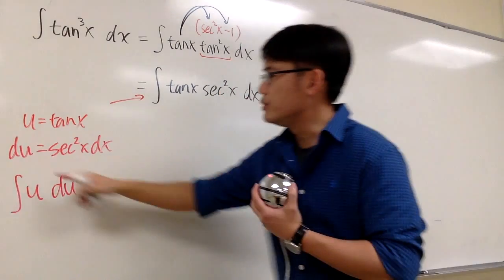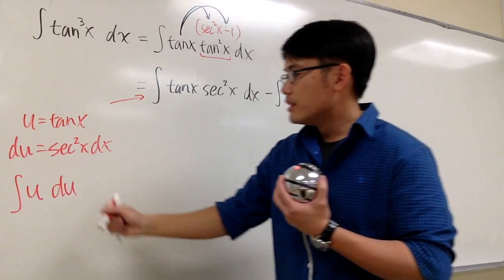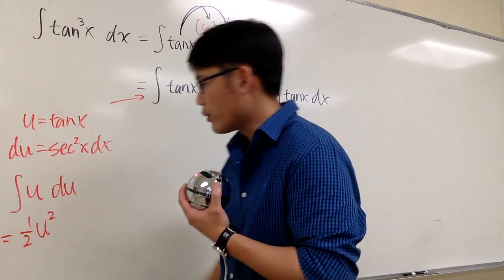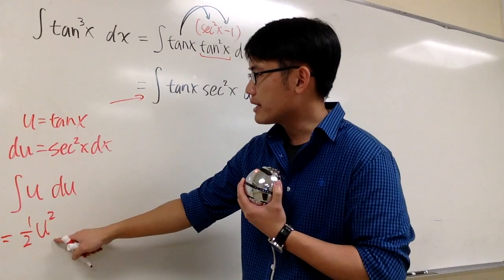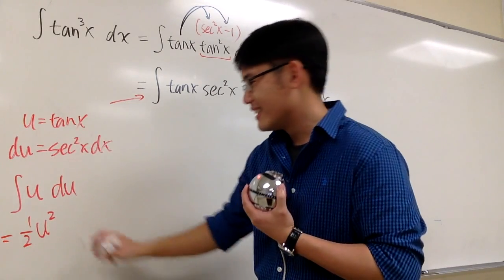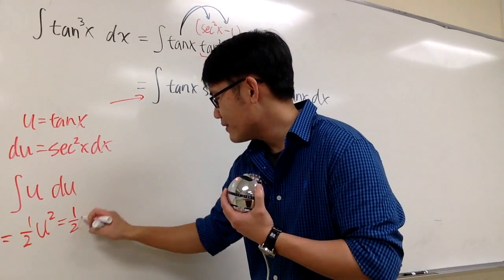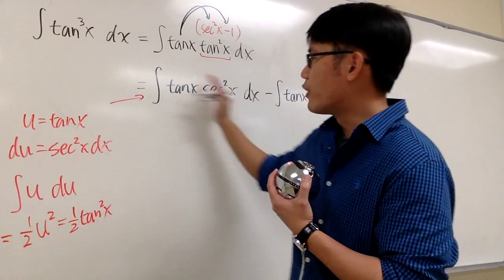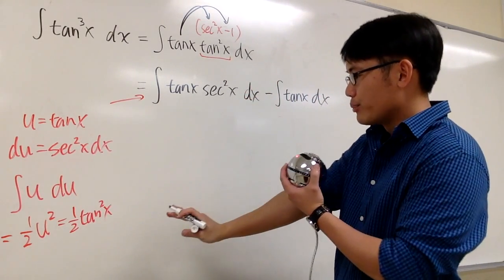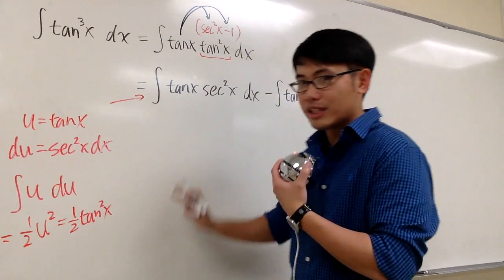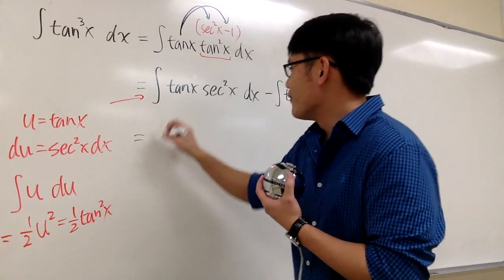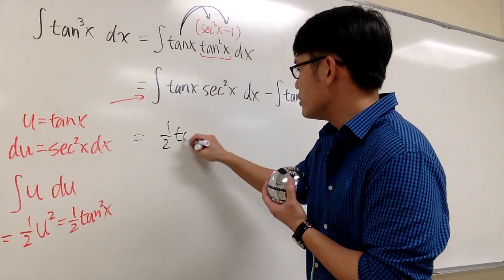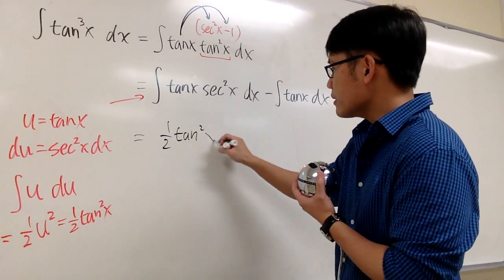This is the same as that, which is the same as du. So to integrate u in the u world, it's just going to be 1 half u to the second power. And then u is what? Tangent x. So in another way, we have 1 half tangent squared x. And that will finish the first integral. And I'm not going to put on a plus c yet, because we're not done. So for the first integral, that's the answer: 1 half tangent squared x.